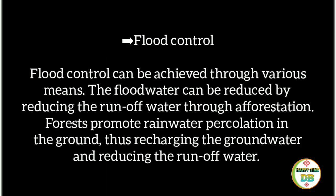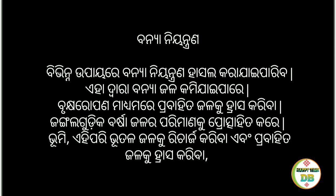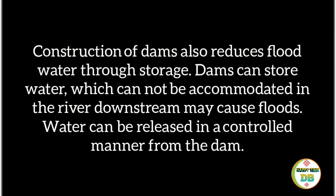Flood Control: Flood control can be achieved through various means. Flood water can be reduced by reducing the runoff water through afforestation. Forests promote rainwater percolation in the ground, thus recharging the groundwater and reducing the runoff water. Construction of dams also reduces flood water through storage. Dams can store water which cannot be accommodated in the river downstream, and water can be released in a controlled manner from the dam.